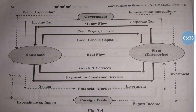Government involvement is also there. The government charges taxes from households — that is called income tax — and money flows from household to government. When the government charges taxes on firms, that is called corporate tax, and money flows from firm to government, creating leakages in the circulation flow. Whatever money the government earns from taxation is used for the welfare of people — that is called public expenditure — and money flows from government to household. When money is used for the welfare of the economy, that is called infrastructure expenditure, and money flows from government to firms.